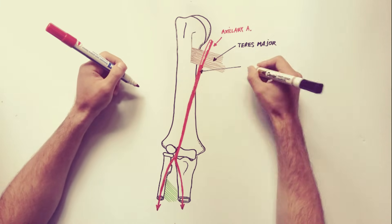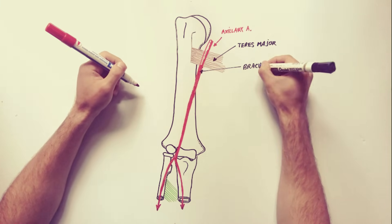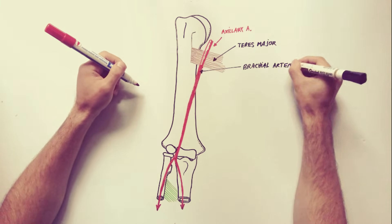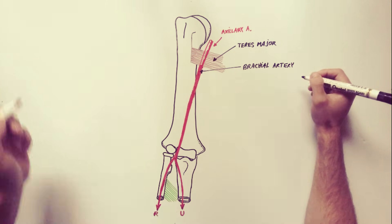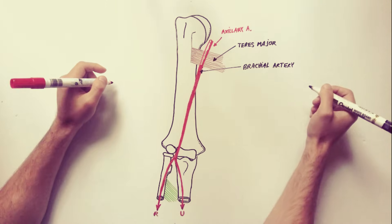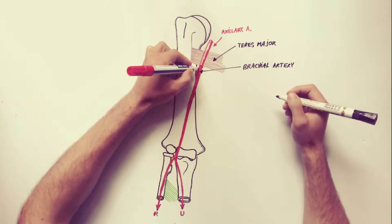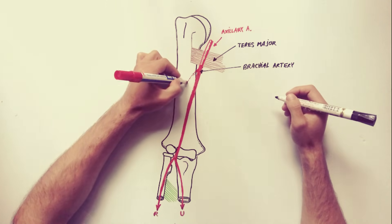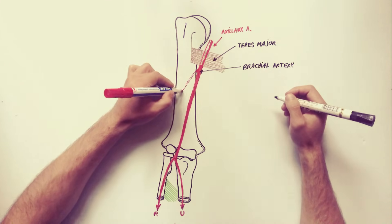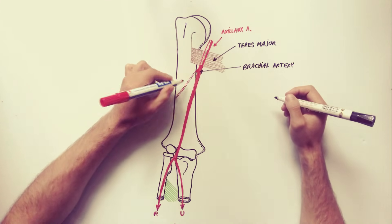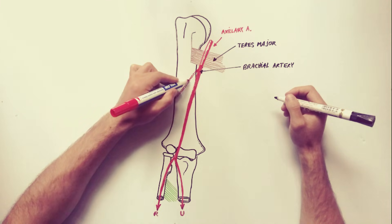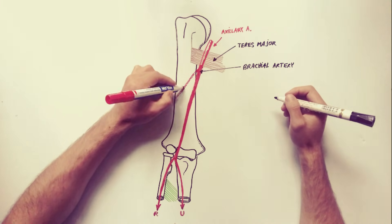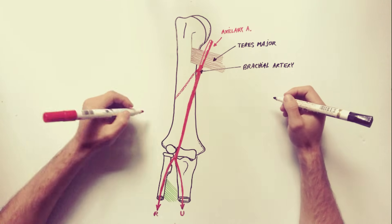The first and largest branch from the brachial artery is the profunda brachii artery. It arises just below the lower border of the teres major and accompanies the radial nerve, with which it enters the spiral groove on the posterior surface of the humerus.